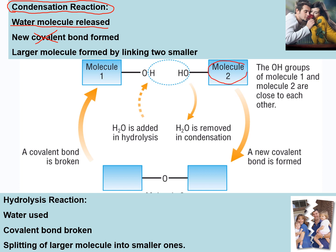Here we have two molecules — each has hydroxyl groups on either side. Using a condensation reaction, the water molecule H₂O is removed. That allows the two atoms to combine, leaving an oxygen in the middle. The oxygen has a valency of two, so it bonds to one molecule on one side and the other molecule on the other side, forming your covalent bond in the middle.